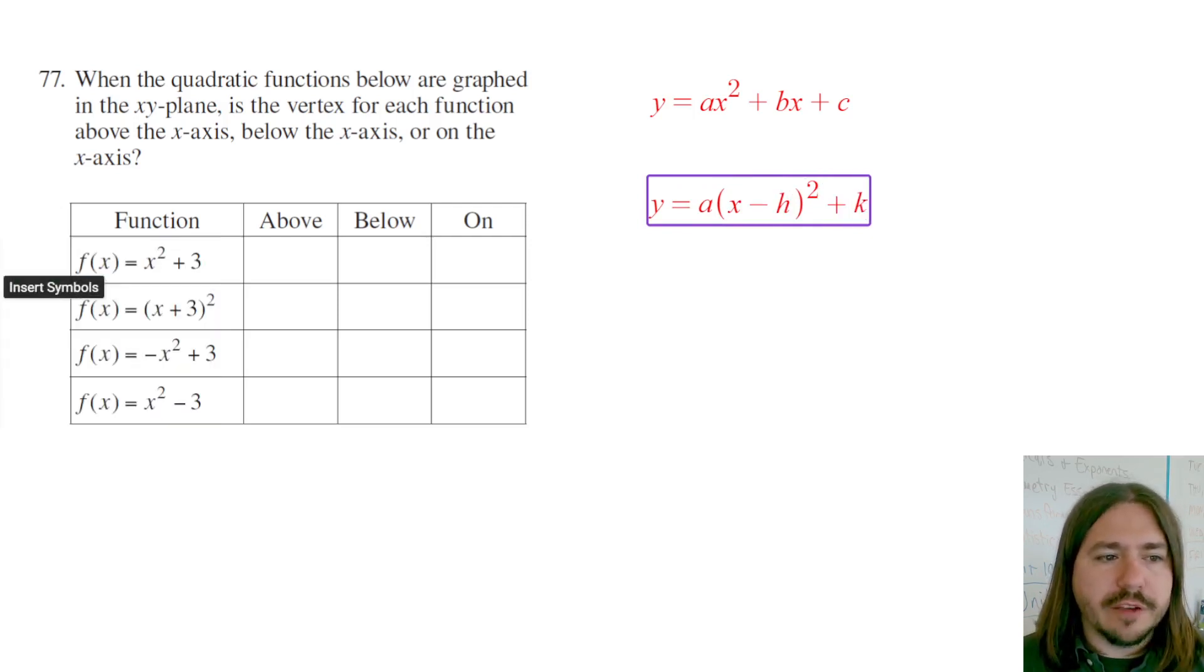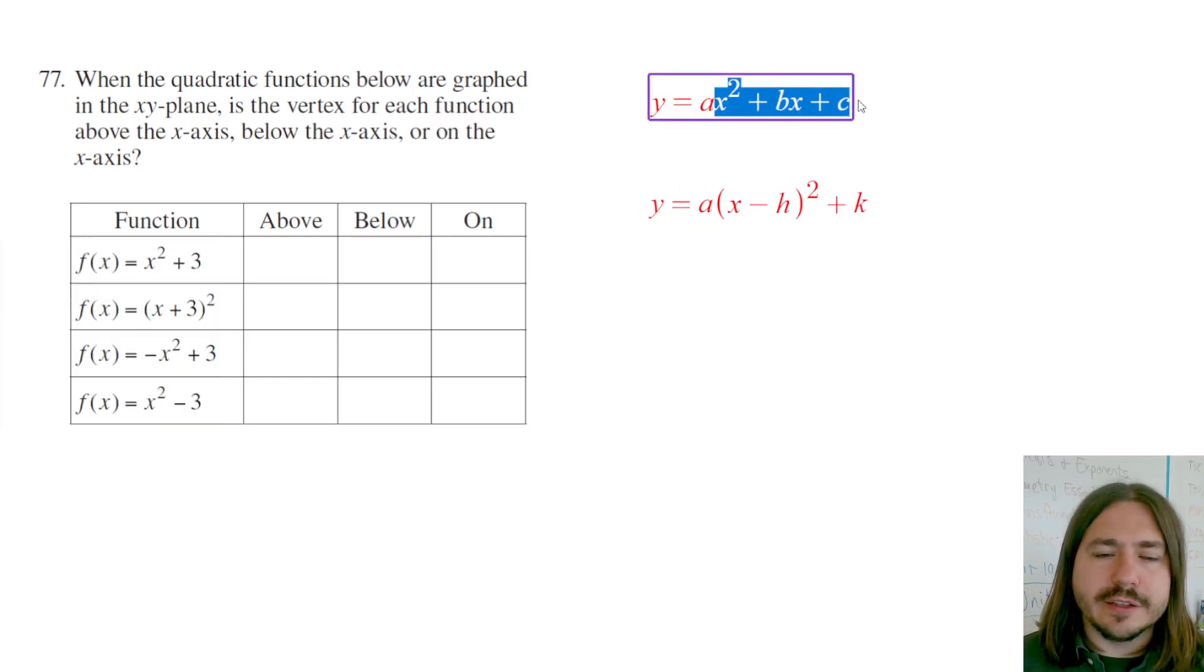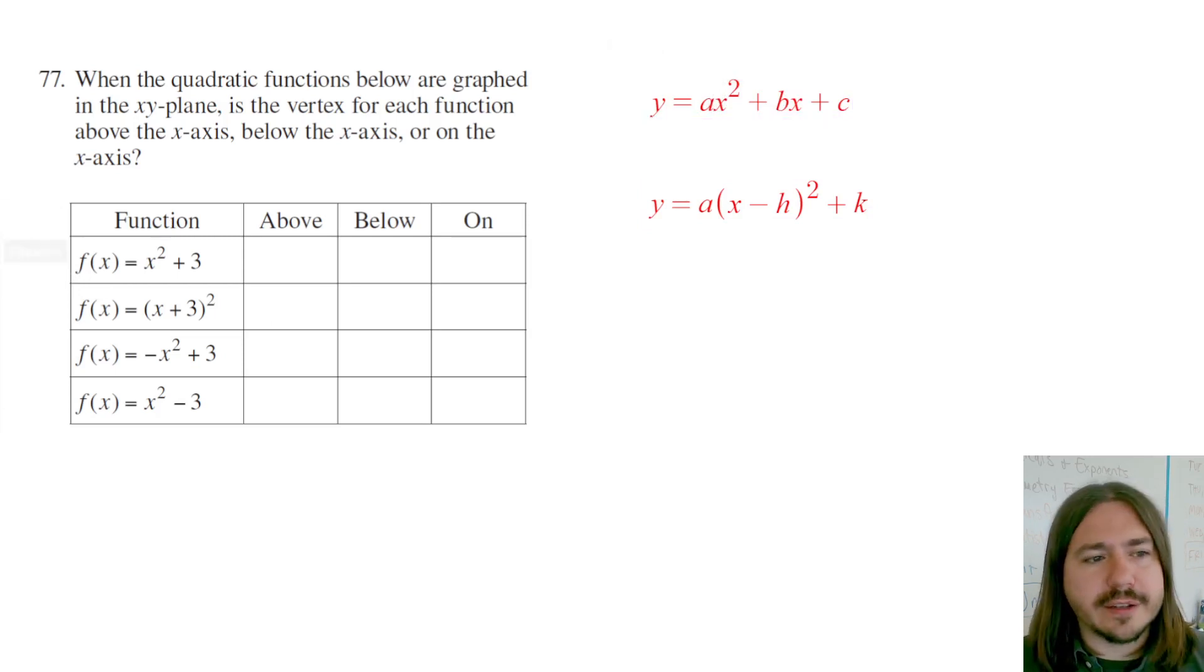So if they're written like this, then you're gonna have to find the vertex by finding first the x-coordinate of the vertex, and you'll do that by computing, or here I'll just call it h, negative b over 2a.